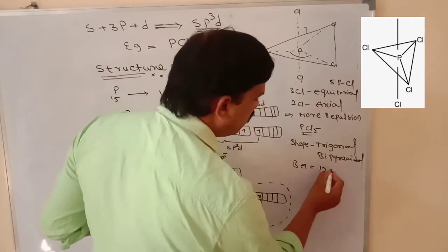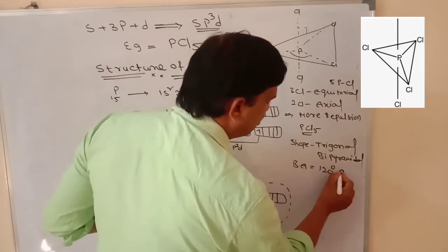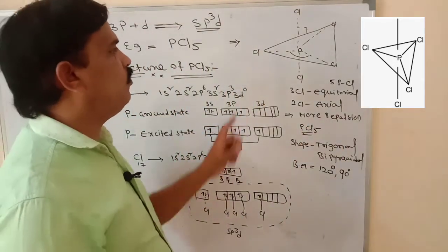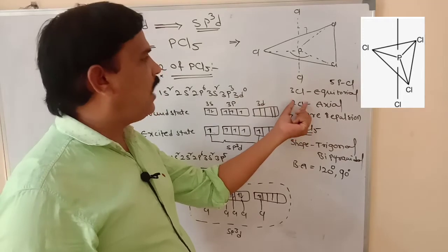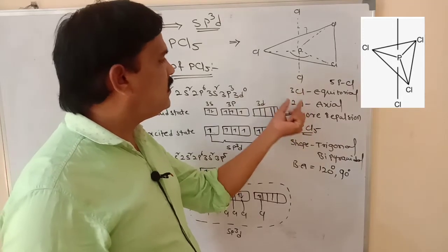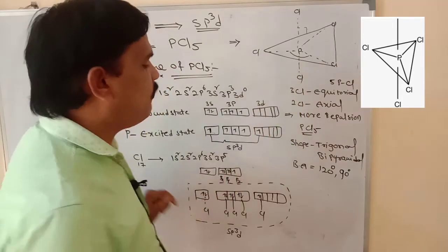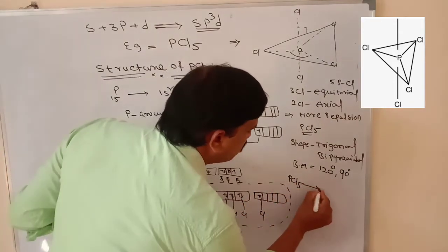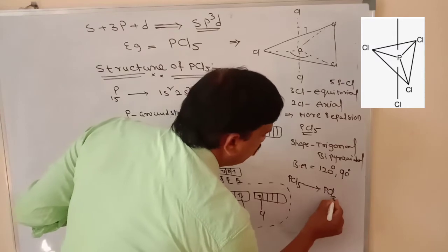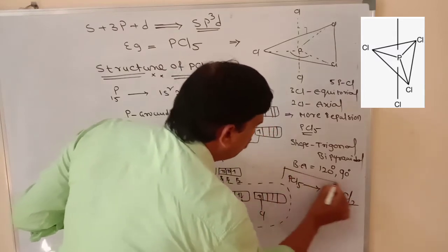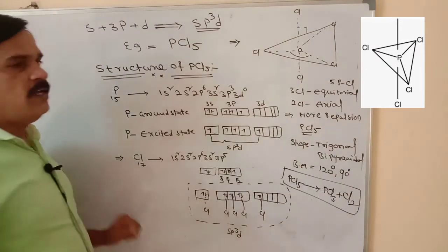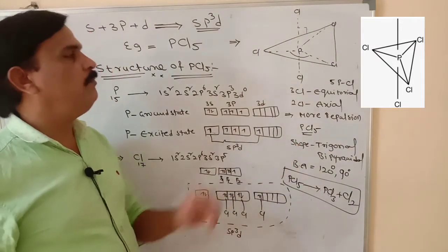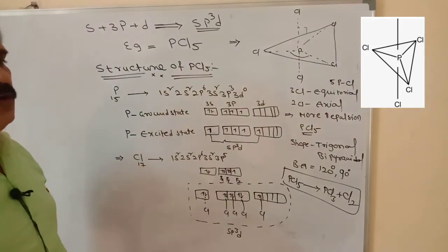There are two types of bonding, making two types of bond angles — one is 120 degrees and another is 90 degrees. Phosphorus pentachloride is more reactive due to the presence of axial position chlorines. When phosphorus pentachloride decomposes, it gives phosphorus trichloride plus Cl2. This is about the hybridization, bond angle, and shape of phosphorus pentachloride.